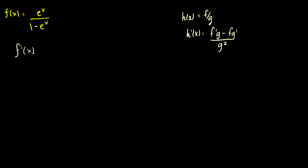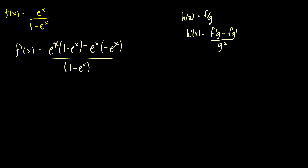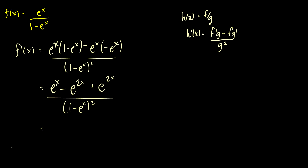So when we take the derivative, f prime of x here, the derivative of e to the x is just e to the x, times 1 minus e to the x. Then we subtract e to the x times the derivative of 1 minus e to the x, which is just negative e to the x. And this is all over 1 minus e to the x squared. So if we simplify, this is just going to be e to the x minus e to the 2x. Then we subtract e to the x times negative e to the x, so we just add e to the 2x. And of course this is all over 1 minus e to the x squared, which if we simplify, we can take out the e to the x, so we're left with e to the x over 1 minus e to the x squared.